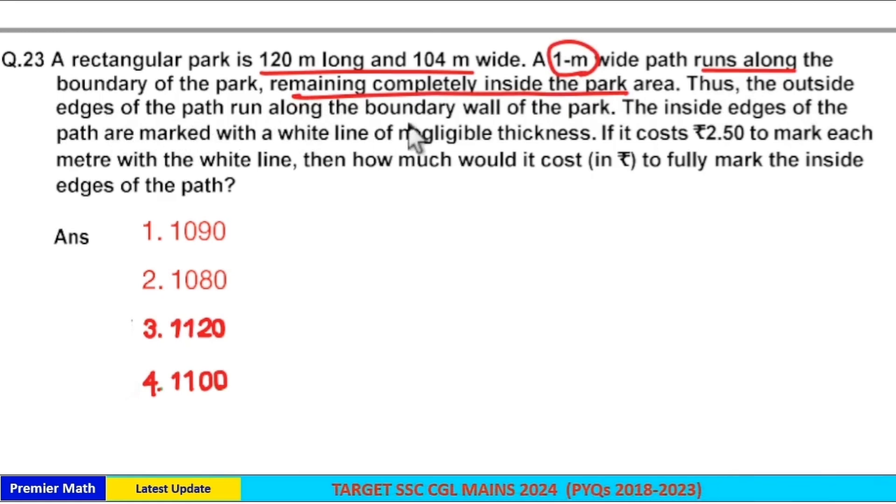Thus, the outside edges of the path run along the boundary wall of the park. The inside edges of the path are marked with a white line of negligible thickness. If it costs Rs 2.5 to mark each meter with a white line, then how much would it cost to fully mark the inside edges of the path?